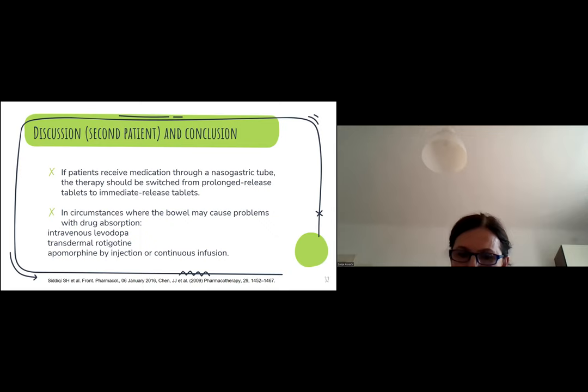Finally, to conclude, if patients receive medication via nasogastric tube, the therapy should be switched from prolonged release tablets to immediate release tablets according to the scheme described by the manufacturer. In circumstances where the bowel may cause problems with drug absorption and lead to deterioration in motor symptoms of PD, a better option might be switching to an available alternative route of drug intake. In case of levodopa, it can be given intravenously if both oral or nasogastric feeding are contraindicated. Options for dopamine agonists include transdermal rotigotine and apomorphine by injections or continuous infusion. Thank you very much for your attention.